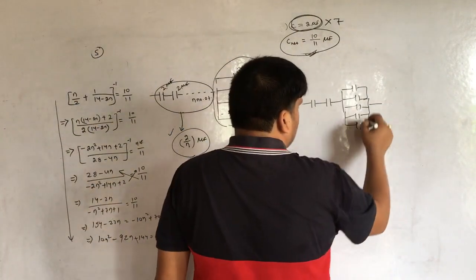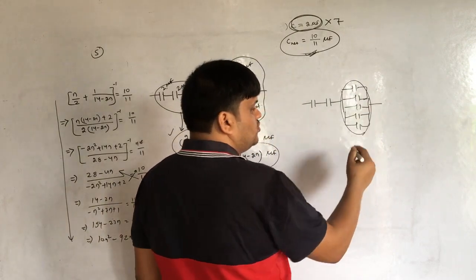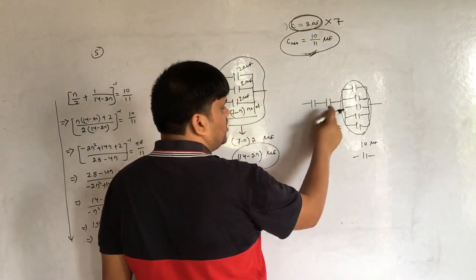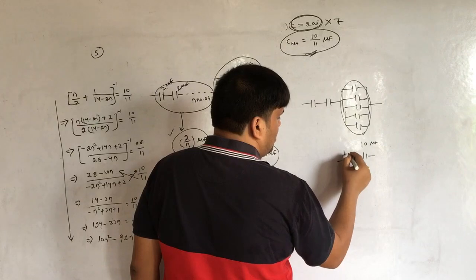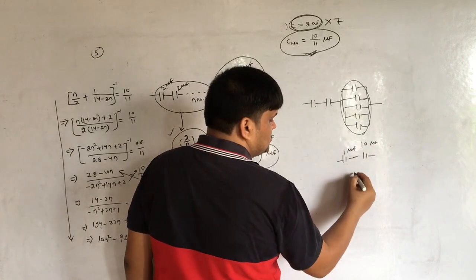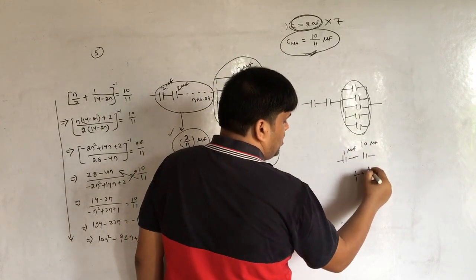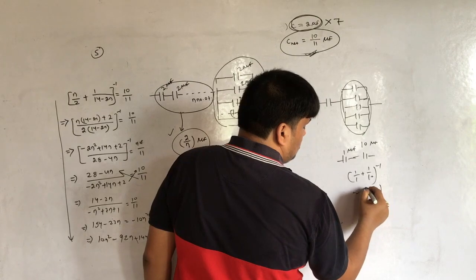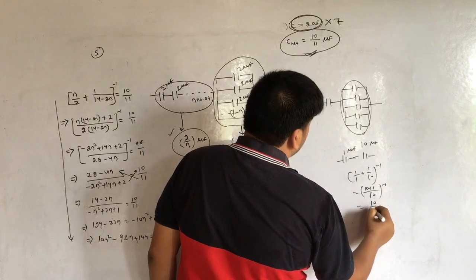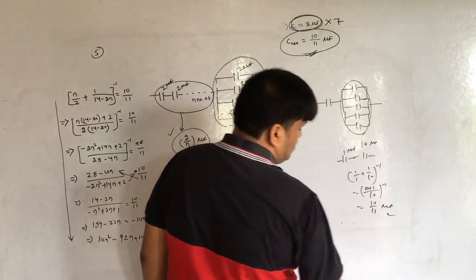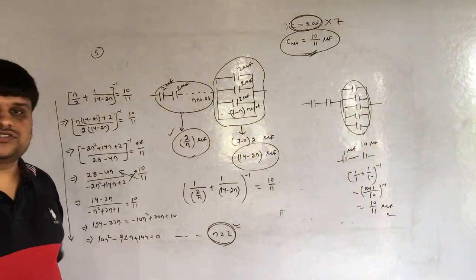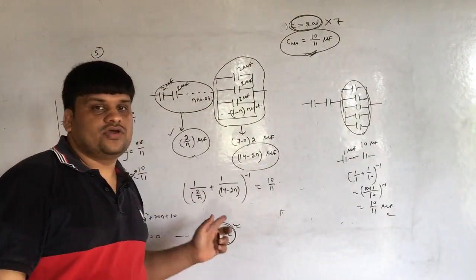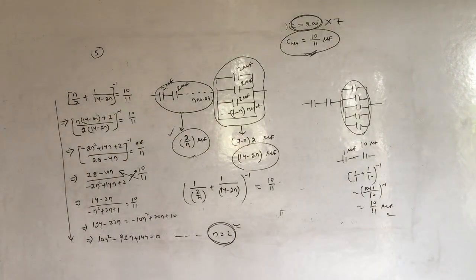Verify: 5 capacitors of 2 μF in parallel give 10 μF; 2 capacitors of 2 μF in series give 1 μF. Then 1 μF and 10 μF in series: (1/1 + 1/10)⁻¹ = 10/11 μF. Correct. Now let us come to the next question.